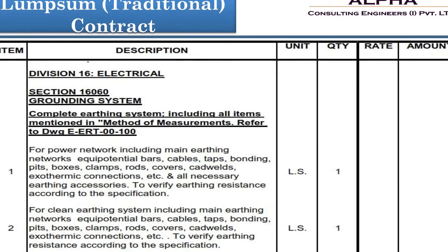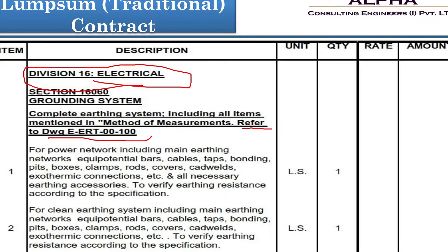Here is a sample of a lump sum contract BOQ where electrical work is shown. It clearly references the drawing to be used for execution. Item number 1 covers power network work — cables and bondings — with the unit given as lump sum and a quantity of 1. In a lump sum contract, the unit is given as LS and a fixed rate is quoted by the vendor. This is a typical example of how a lump sum contract BOQ is prepared in a project.